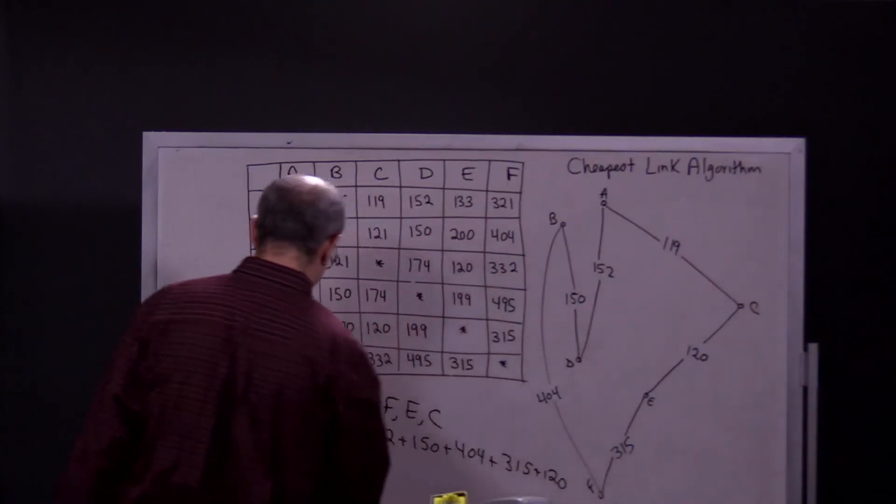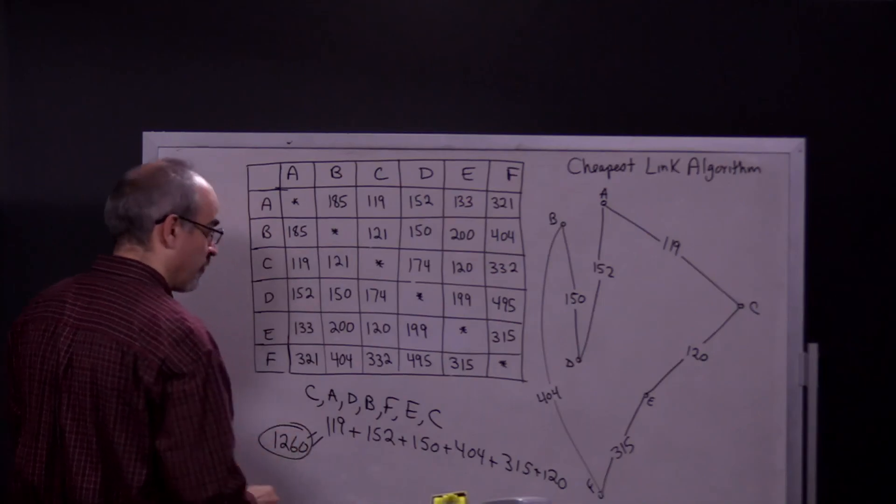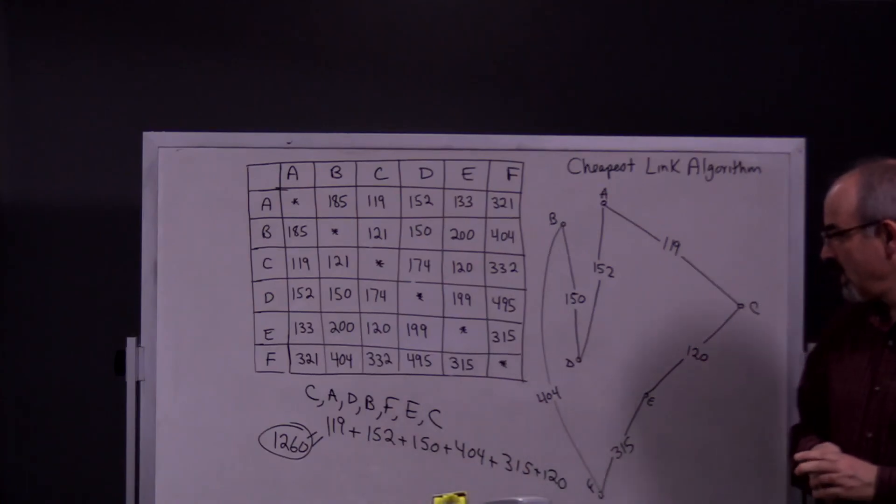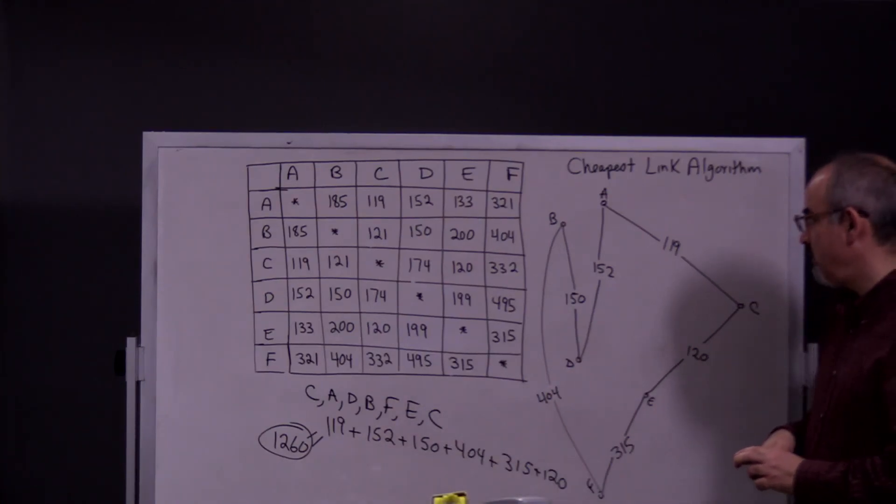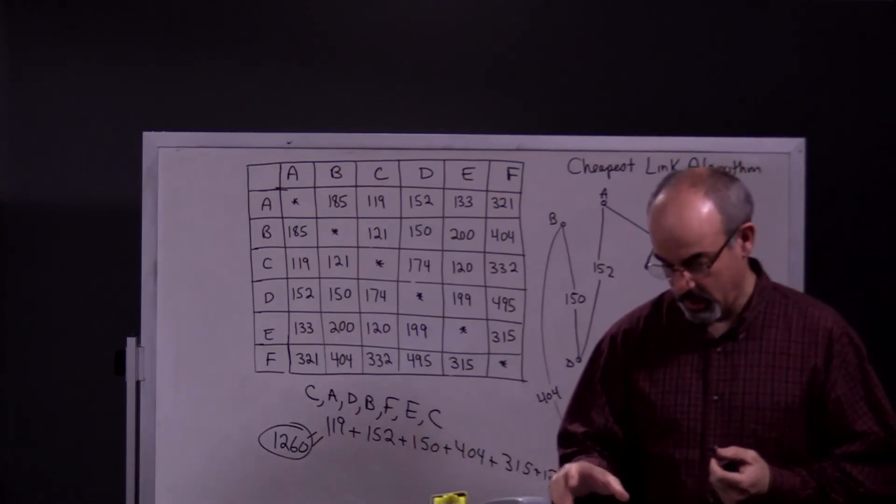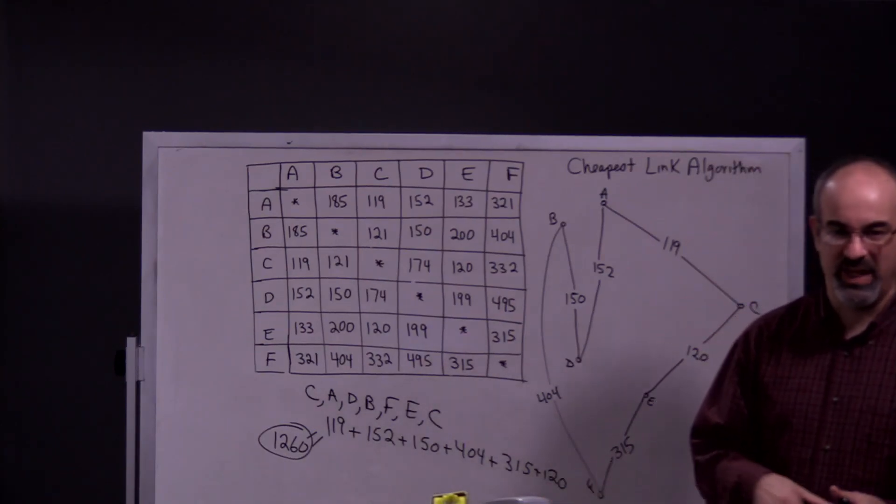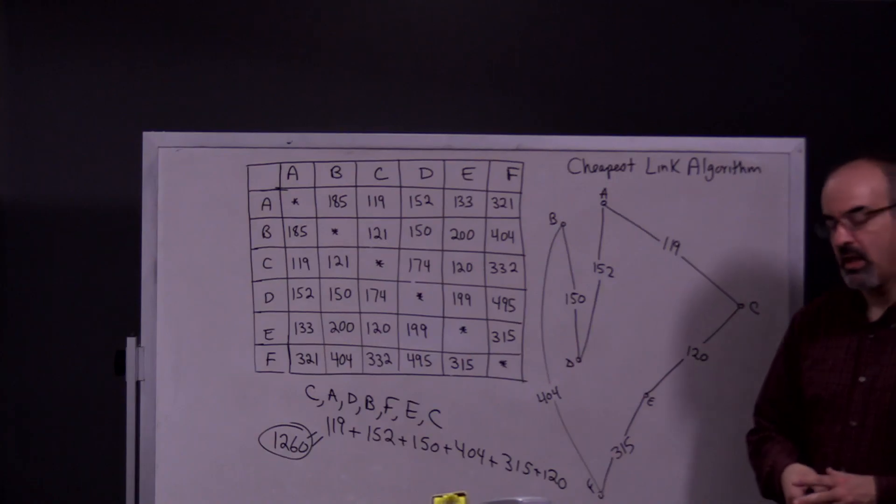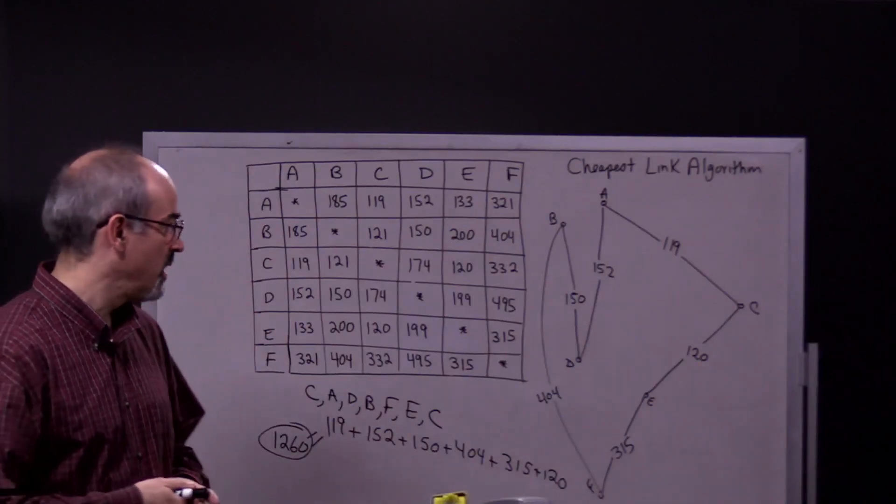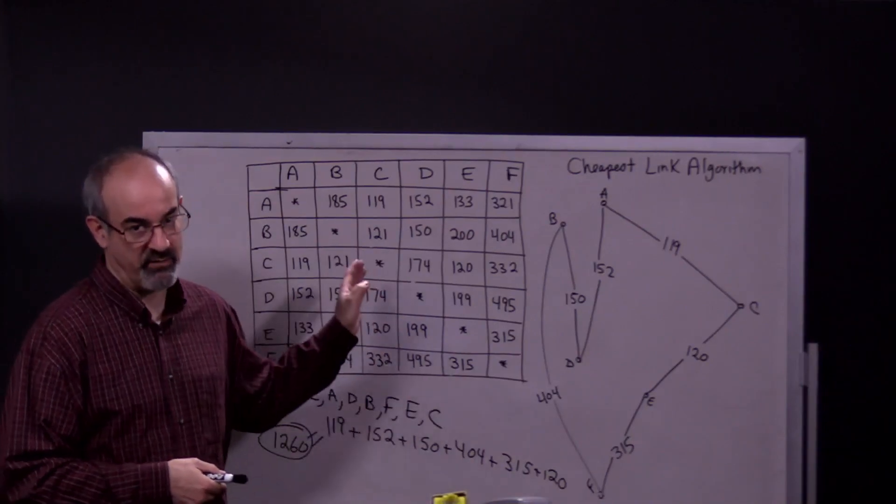I think when we did this before we got 1337 or something for this same problem when we did it using the nearest neighbor algorithm. So we get 1260 using the cheapest link algorithm, which is good that we got a better tour because in my last problem using the cheapest link algorithm, we got a worse tour than the nearest neighbor. They don't give you the same answer necessarily. Sometimes they do, but they don't always.